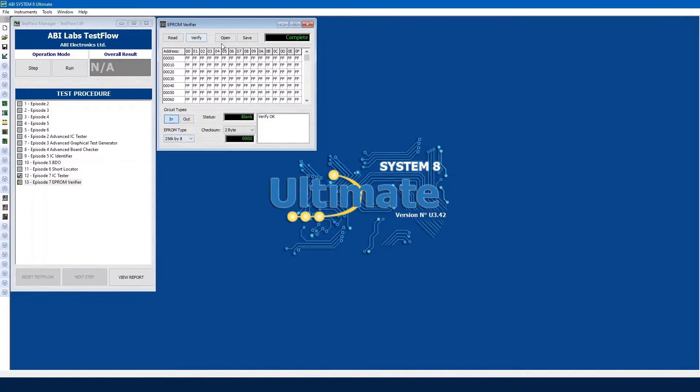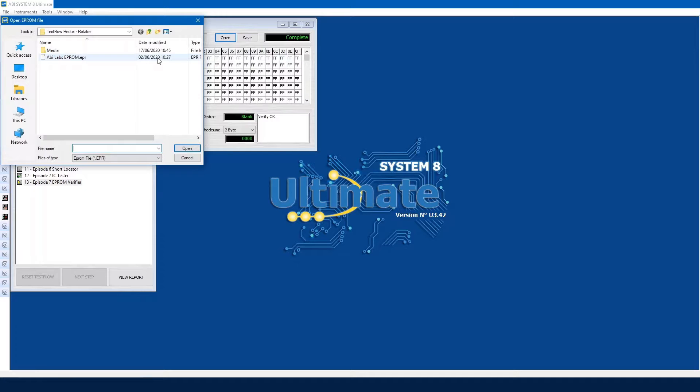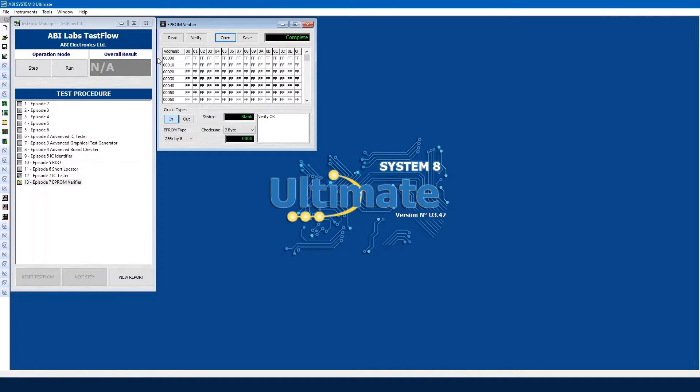So simply open up the previously stored information by simply clicking on it like so, and then once this data opens and is available within the instrument, we can then use that to verify against the EEPROM we have.